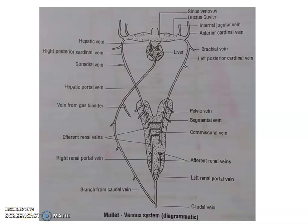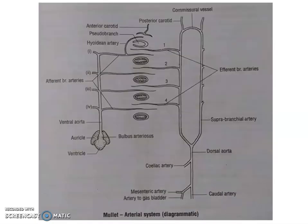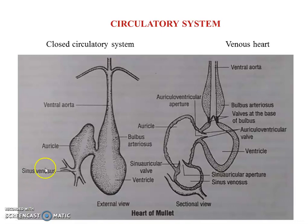We are moving on to the second part of the circulatory system — the venous system. The venous system includes all vessels which carry blood from various parts of the body towards the heart. In the case of mullet, deoxygenated blood collected from various parts of the body has to be emptied into the sinus venosus.